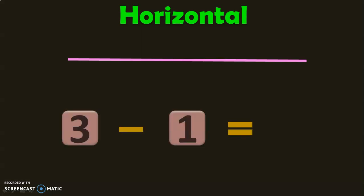First, horizontal means moving from left to right — it is similar to a sleeping line. In horizontal subtraction, we will be writing the numbers next to each other with the subtraction sign in between. For example, 3 minus 1 equals — you will write the answer after the equal to sign.